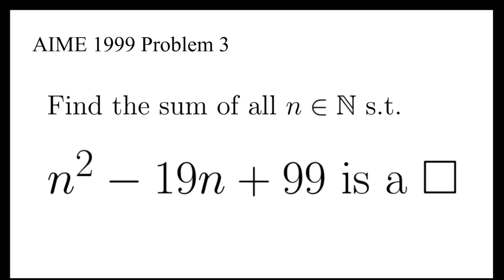In this video, we are going to find the sum of all natural numbers n such that n squared minus 19n plus 99 is a perfect square. This is a problem from AMC 1999.